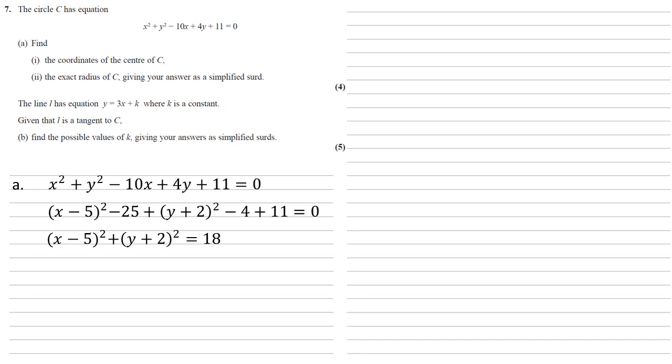We can now use this to find our coordinates. Our coordinates are the x and y values that make the brackets equal to 0, so the centre must be 5 and minus 2. The radius is the square root of the number on the other side, so our radius is root 18, which as a simplified surd, taking the 9 out, is 3 root 2.